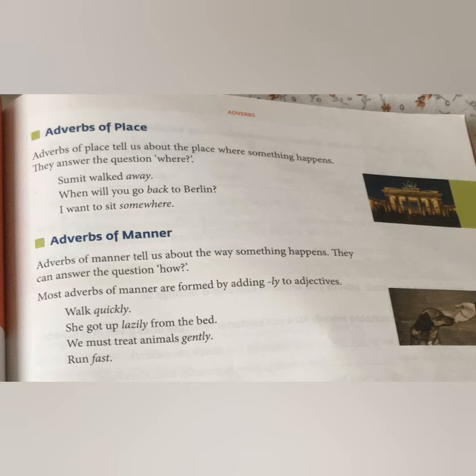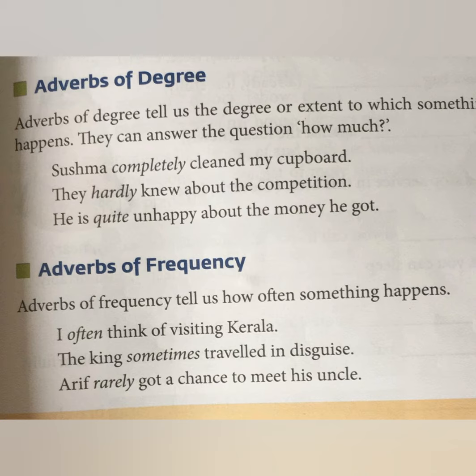So, did you understand these three types? The first type, adverb of time, answers the question 'when.' Adverb of place answers the question 'where.' And adverb of manner answers the question 'how.' You need to remember what kind of question each type answers and what exactly it points out.